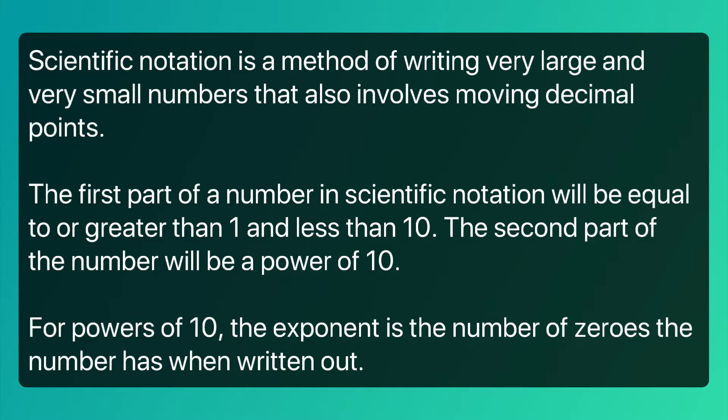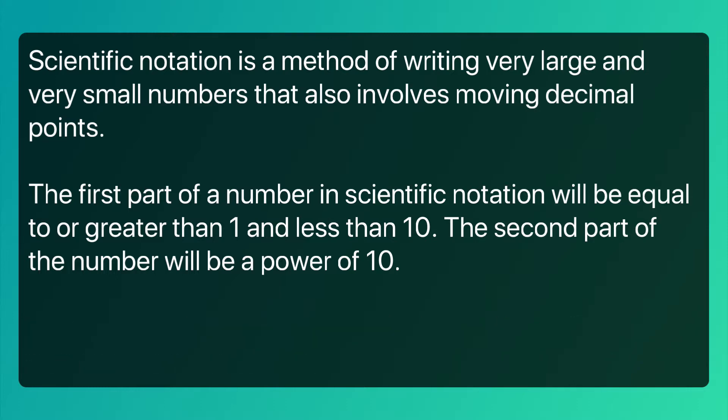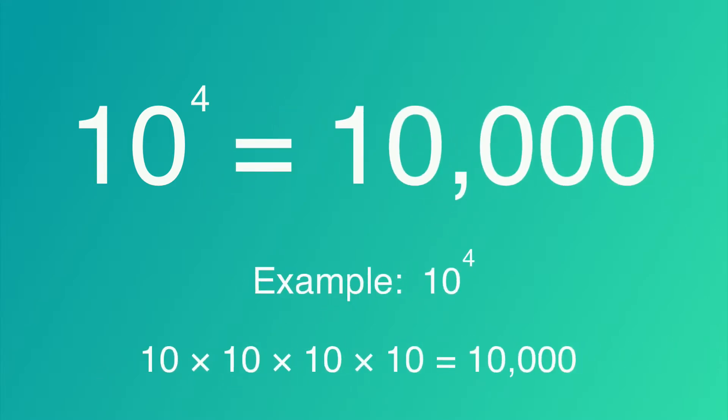For powers of 10, the exponent is the number of zeros the number has when written out. For example, 10 to the fourth power equals 10,000. The fourth power means you multiply by 10 four times. We will speak more about exponents in the next video, but for now let's stick to scientific notation.